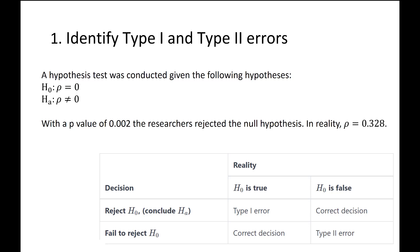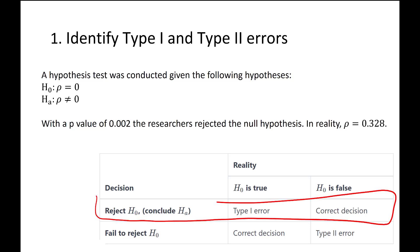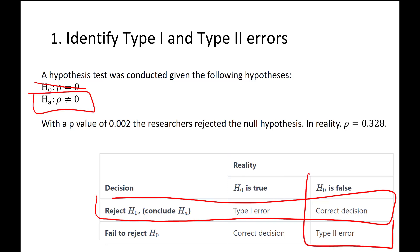Here's our last example. A hypothesis test was conducted with the null hypothesis that rho, the population correlation, equals 0, and the alternative that rho does not equal 0. With a p-value of 0.002, the researchers rejected the null hypothesis. In reality, rho equals 0.328, meaning the null hypothesis is false. They made a correct decision.